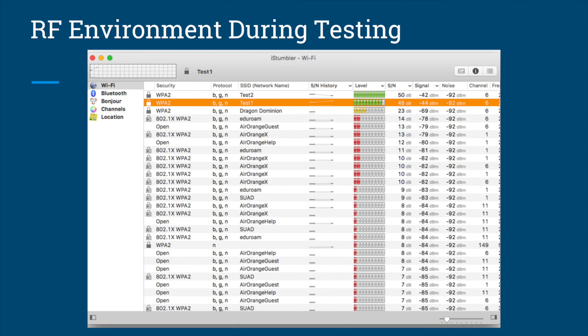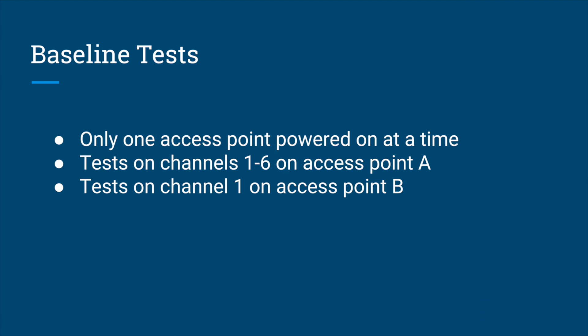With ambient RF interference limited, we conducted baseline throughput testing on channels 1 through 6 in the 2.4 GHz band. We used these baseline calculations later in the project to compare with our interference throughput testing.